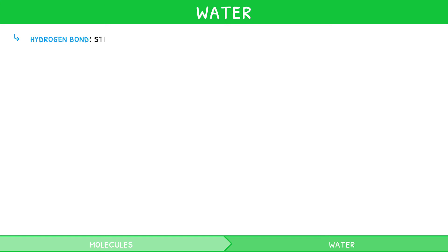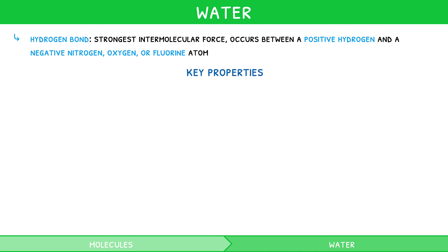A hydrogen bond is the strongest intermolecular force, and it occurs between a positive hydrogen atom and a negative nitrogen, oxygen, or fluorine atom. The existence of hydrogen bonds between molecules of water gives rise to several key properties that you need to be aware of. Let's look at them now.